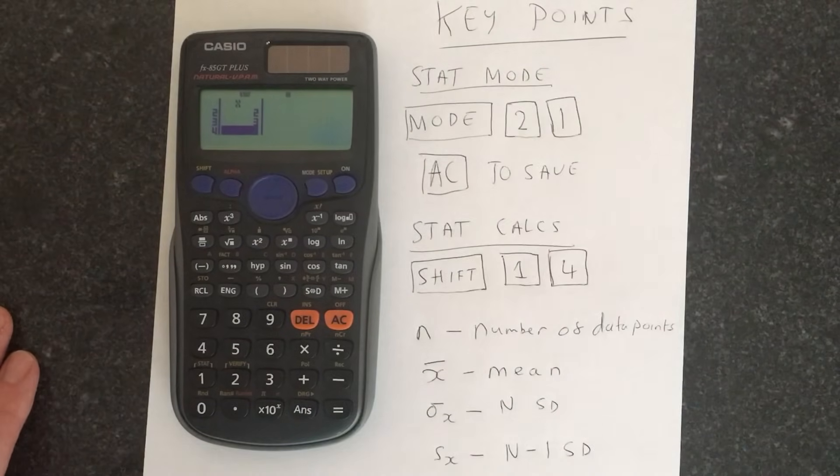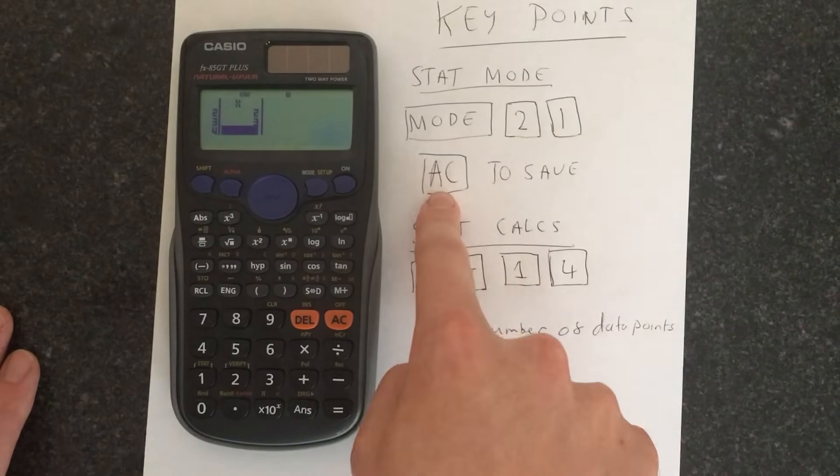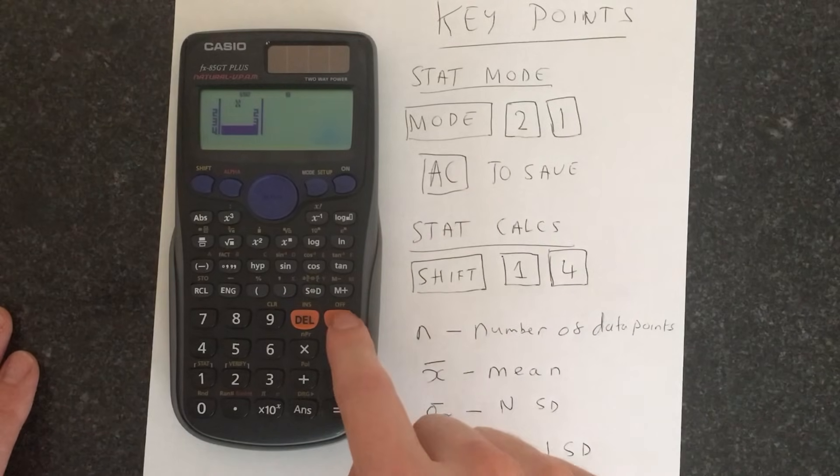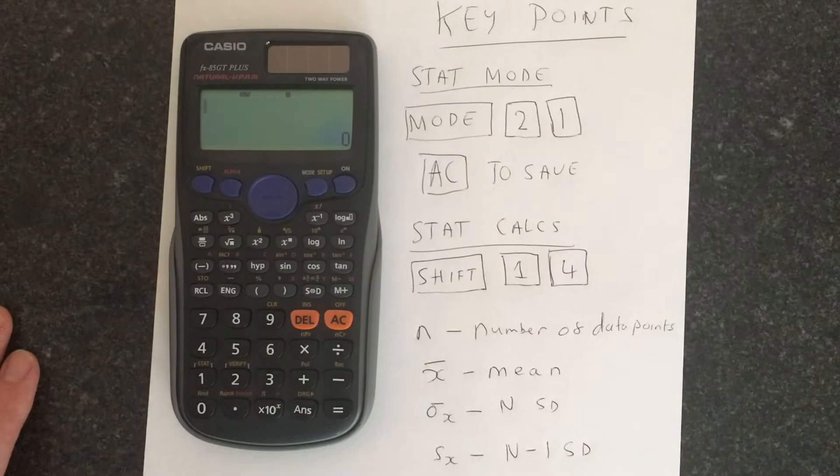You input all of your data and then the important thing is you press the AC button which is down here next to OFF. You press that and that is now saved to the memory.